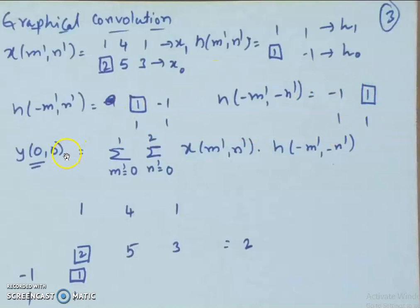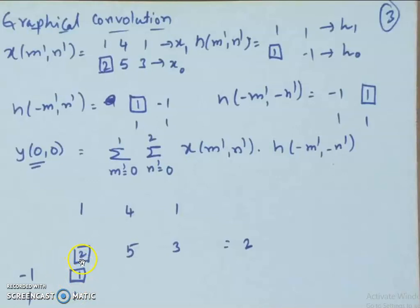To obtain y[0,0], take x[m',n'] and h[-m',-n'], multiply element-wise for each value of (m',n') in the range, and sum them up. We get 2×1=2, 5×0=0, 3×0=0, 1×0=0, 4×0=0, 1×0=0, and so on — there is only one non-zero term. Hence y[0,0] = 2.